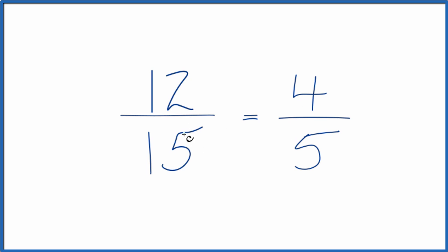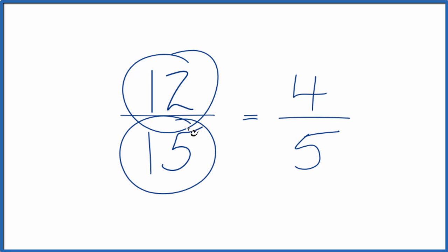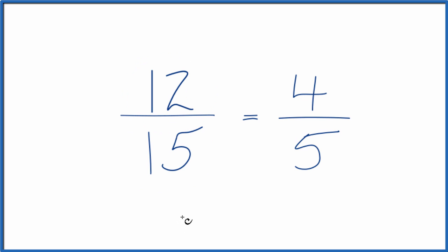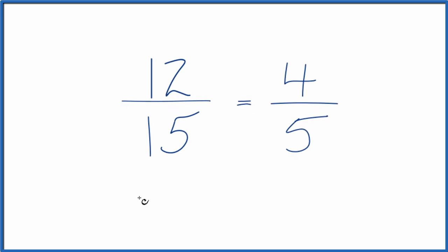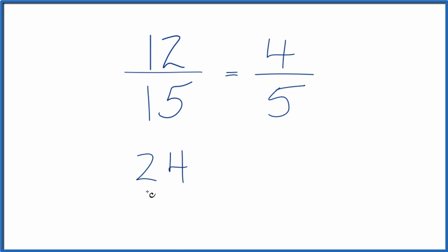We could also multiply the numerator by 2 and the denominator by 2 — we're just doubling things here — to get another equivalent fraction for 12 fifteenths. 2 times 12 is 24, and 2 times 15 is 30. So 24 thirtieths is another equivalent fraction for 12 fifteenths.